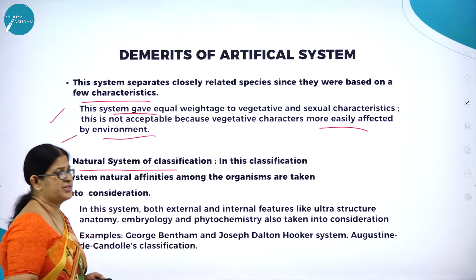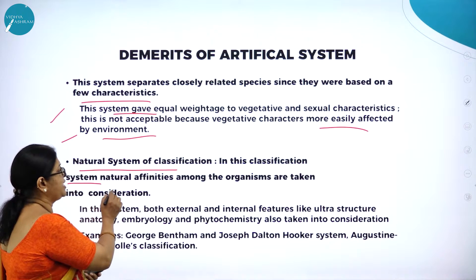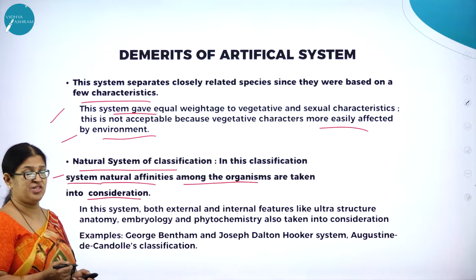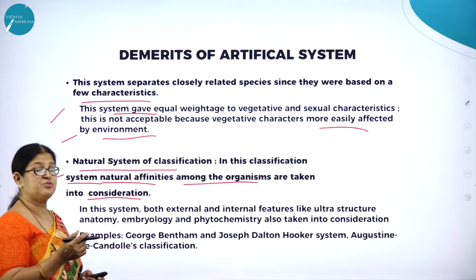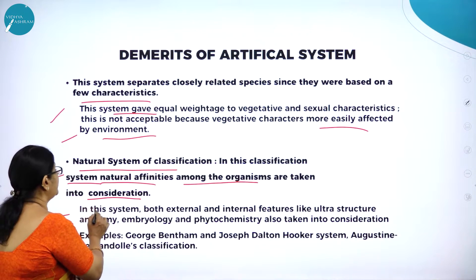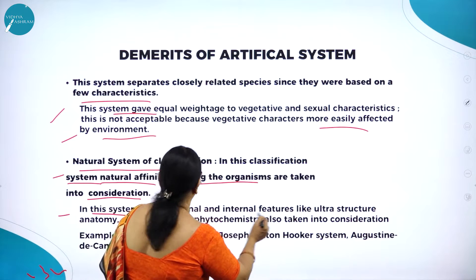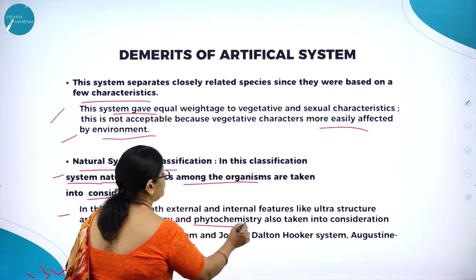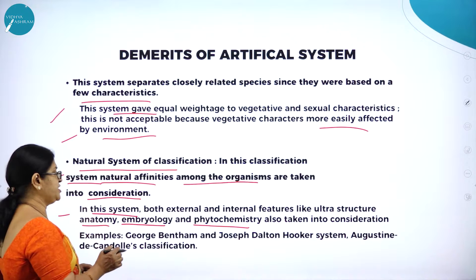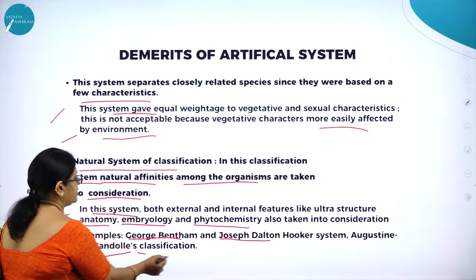The natural system of classification was put forward by Bentham and Hooker. In this system, natural affinities — that is, natural similarities — among the organisms are taken into consideration. Both external and internal features like ultrastructure, anatomical features, embryological, and phytochemistry are also considered. This system was put forward by George Bentham and Joseph Dalton Hooker, and also Auguste de Candolle's classification.